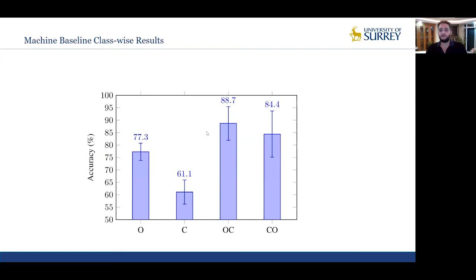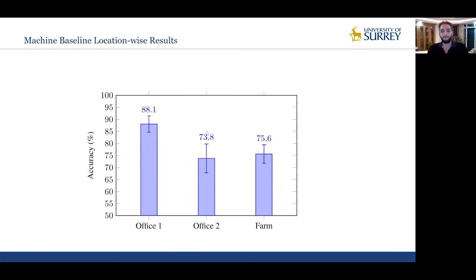Analyzing the closed set system in more detail, the class-wise performance shows that transition classes are the easiest to classify, followed by the open state class. The system performed poorly on the closed state class, which is understandable given less acoustic activity during that state. Location-wise performance shows that Office 1 recordings are easiest to classify, followed by the farm and Office 2. These results show that the farm location is not inherently difficult for the baseline, despite the lack of acoustic activity observed there.